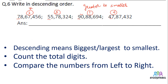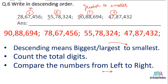Descending means biggest to smallest — that is, from the larger number to the smaller number. First count the total digits, then compare from left to right. Our answer: the 90 lakh number is 1st, the 78 lakh number is 2nd, the 55 lakh number is 3rd, and the 47 lakh number is 4th.